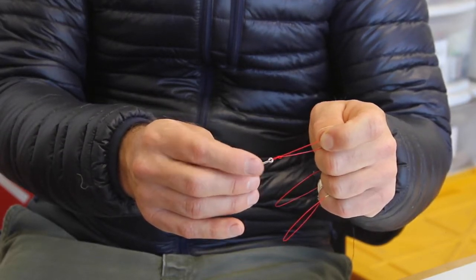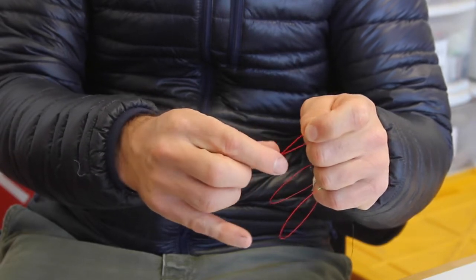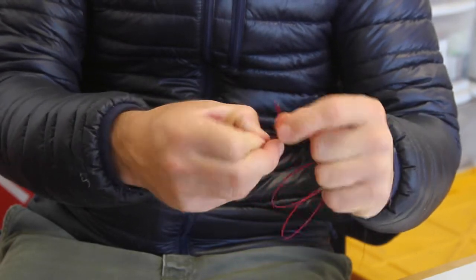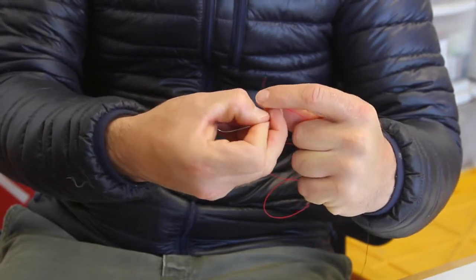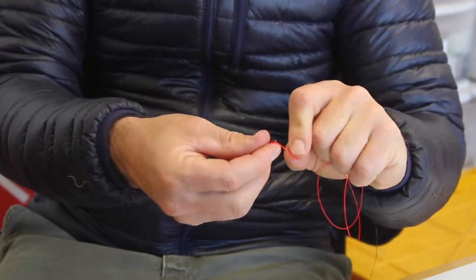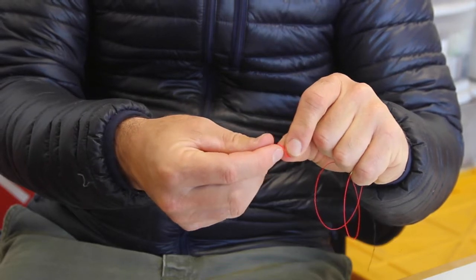So I slide my overhand knot to where I want my loop to be, and then I take my tag end and wrap one, two, three times around my main line. Then I come back down through the overhand knot.